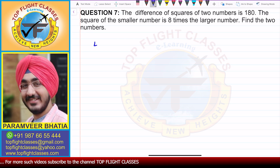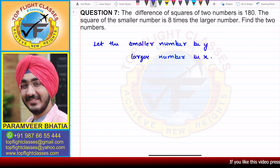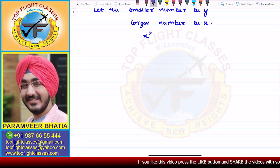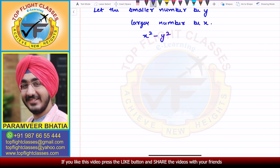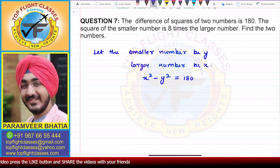We will let the smaller number be y and the larger number be x. Since x is the larger number, x² is also bigger than y². So, x² minus y² is equal to 180. This is the first equation.